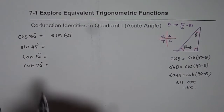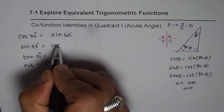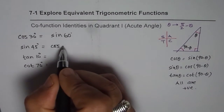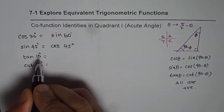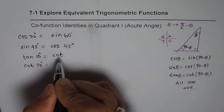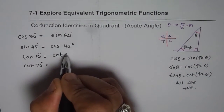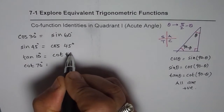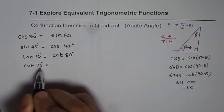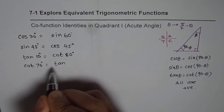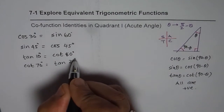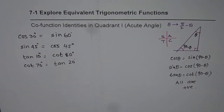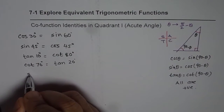For sine of 45°, we write cos of 90 minus 45, which is cos of 45 itself. For tan of 10°, it will be cotangent of 90 minus 10, which is cotangent of 80 degrees. For cotangent of 70°, it will be tan of 90 minus 70, which is tan of 20 degrees. That is how you get your co-function answers in degrees.